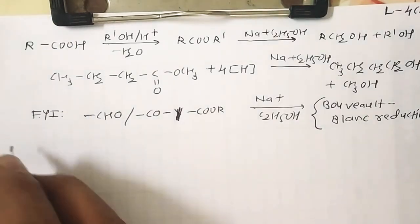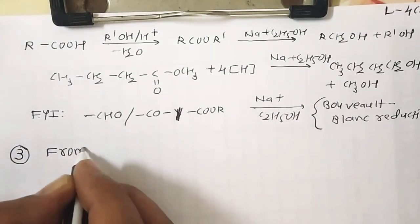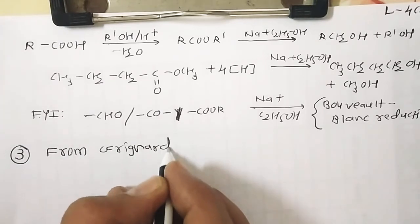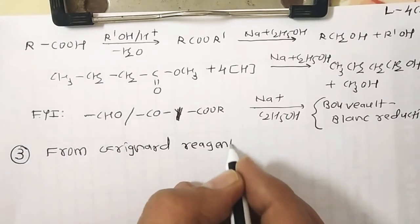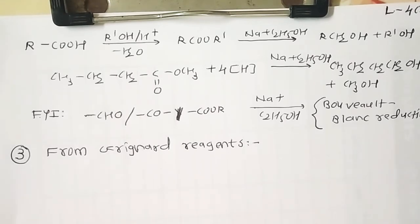Our next point, number three, is from Grignard reagents. We already have an idea about Grignard reagents. First, we take a haloalkane; in the presence of anhydrous ether, if we add magnesium, the alkyl magnesium halide or aryl magnesium halide in suspension in ether is called a Grignard reagent. With the help of Grignard reagents we can convert aldehydes and ketones into alcohols.